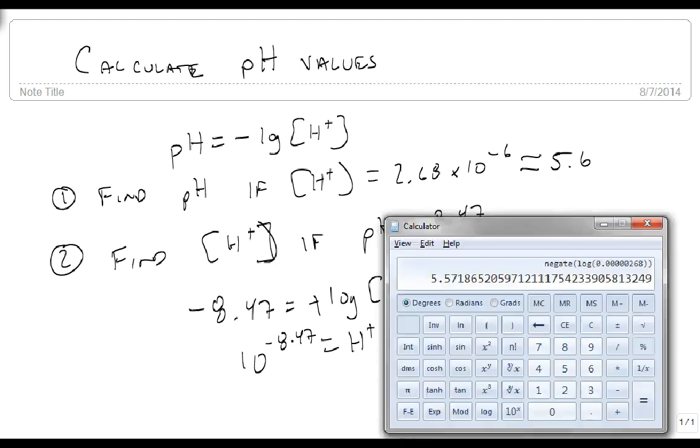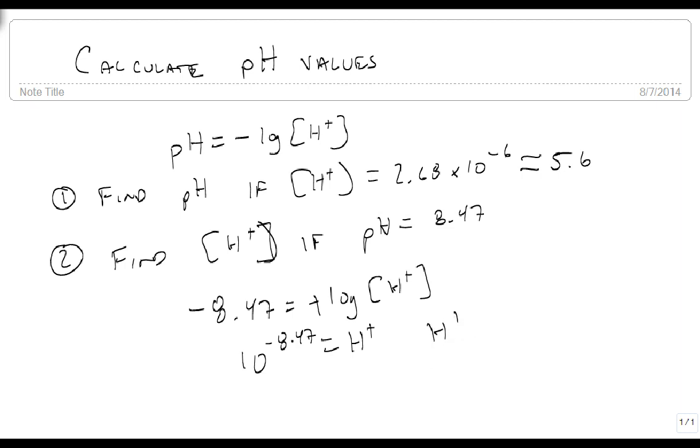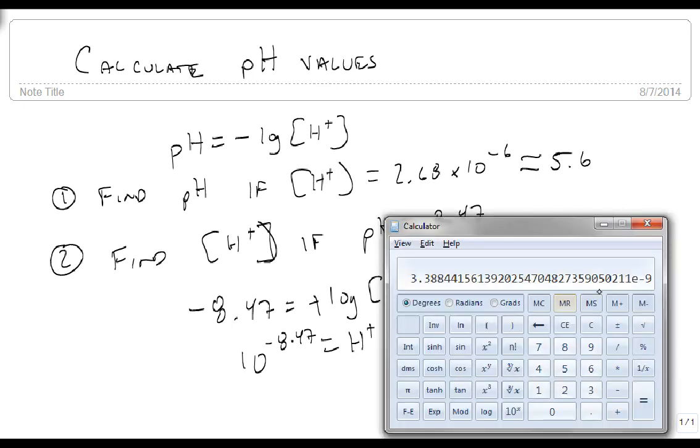So again, we get out our calculator, and we simply raise this to 8.47 negative, hit equals, and it's 3.38 times 10 to the minus 9th. So H plus is approximately 3.38 times 10 to the minus 9th, and we get our answer. And that's how we find pH values.